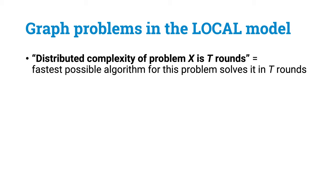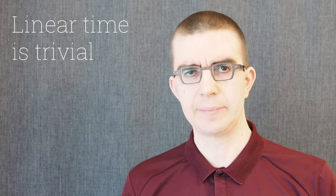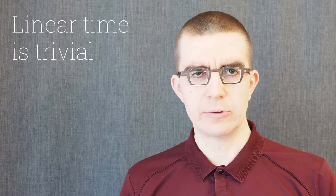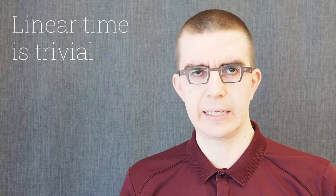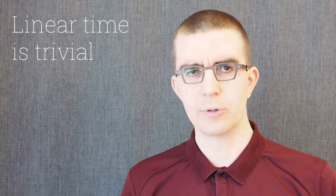If you say that the distributed complexity of some graph problem is t rounds, we mean that the fastest possible algorithm solves it in t rounds. Of course, there are few problems solvable in constant time, so usually t is some function of n — the number of nodes — maybe order of log log n, log n, or order of n. At this point it is good to note that in this setting linear time is trivial. If you have a connected graph, in a linear number of rounds all nodes can learn everything about the graph, and then the rest is just local computation. So linear time here is basically brute force.